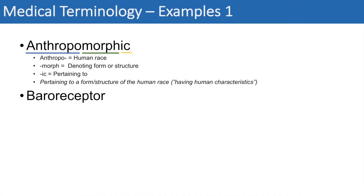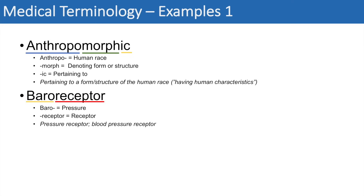The next example is baroreceptor. You might recognize receptor as an actual word. But what does baro mean? If we remember from this lesson, baro means pressure. So a baroreceptor really is a pressure receptor — and often relates to blood pressure. There are baroreceptors in our body that monitor our blood pressure.